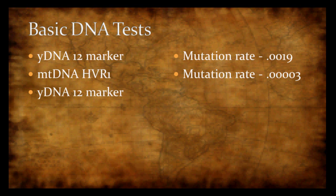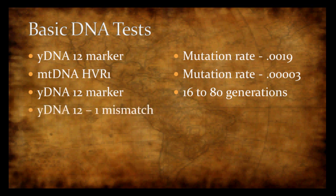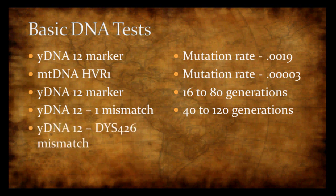When you run a common ancestor calculation for a Y-DNA 12-marker test, you get a range of 16 to 80 generations — based on a probability of 50% to 95%. But if you have just one mismatch in the 12-marker test, it jumps to 40 to 120 generations. And because not all Y-DNA markers are created equal, if your DYS-426 has a mismatch, the probability shoots to 240 to 800 generations.